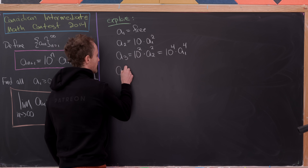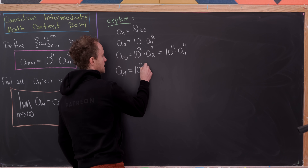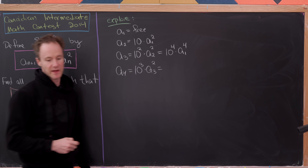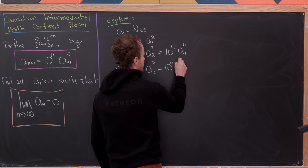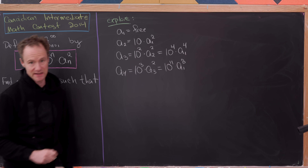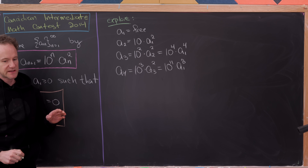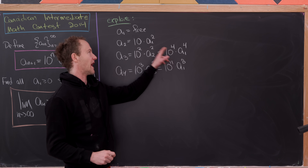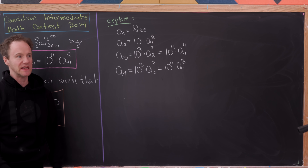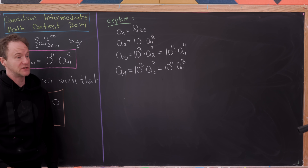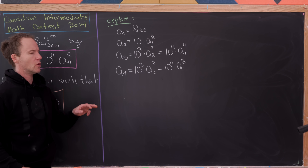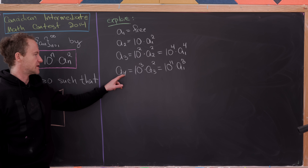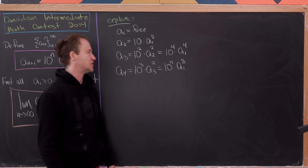Continuing, a_4 = 10³ · a_3², which gives us 10^{11} · a_1^8. Something that jumps out very quickly is that the power of a_1 is not just even, it's a power of 2. Furthermore, it's one less power of 2 than the index we're at: at a_4, the power is 8 = 2³; at a_3, the power is 4 = 2².